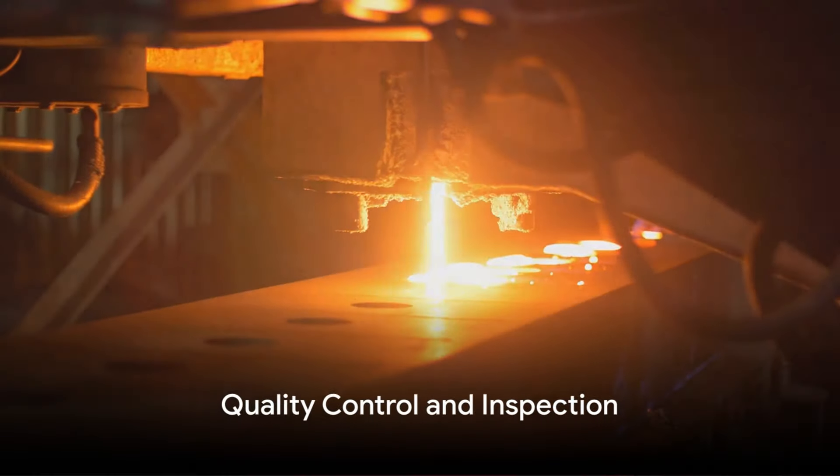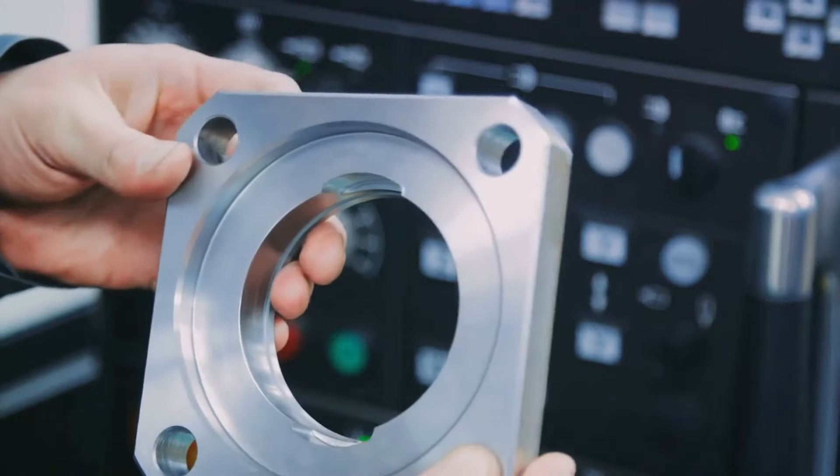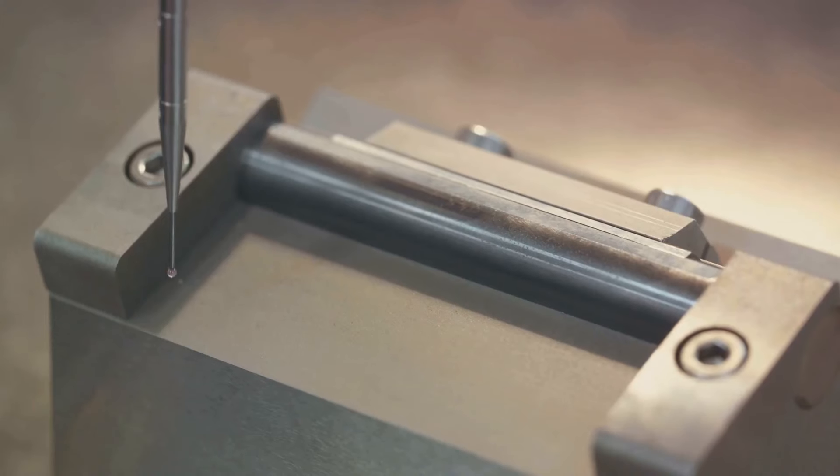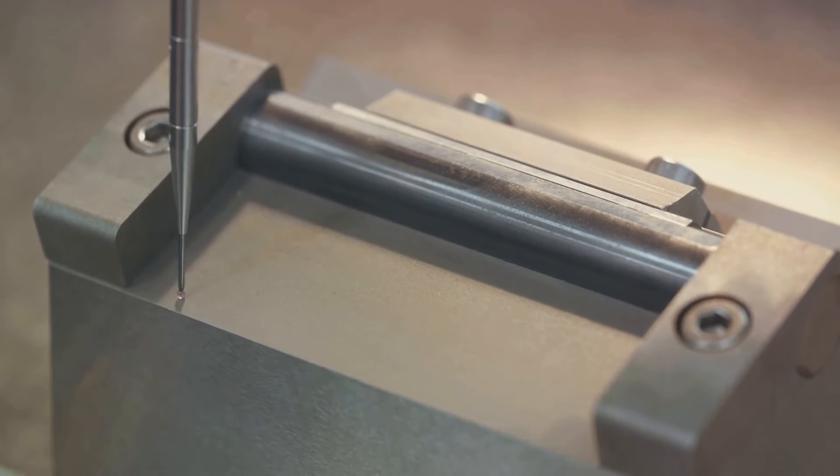After the parts have been produced and transformed, they undergo a final quality control and inspecting process. This ensures that every piece that leaves eMachineShop meets the highest standards of quality and precision.